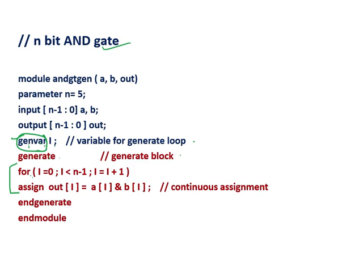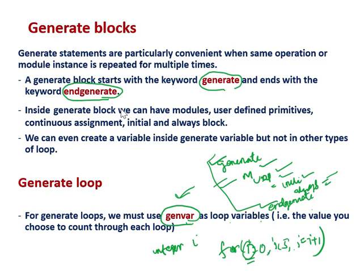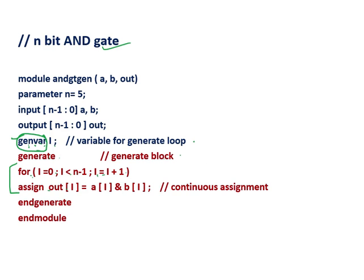Inside the generate block we have: for i = 0; i < N-1; i = i + 1. The variable 'i' is of genvar type. Then we have a continuous assignment: assign out[i] = a[i] & b[i]. This is the continuous assignment inside the generate block. So it will generate out[i] = a[i] AND b[i] for each iteration — with N-1 equal to 4, that gives iterations 0,1,2,3 — making this a 4-bit AND gate using a generate loop and genvar variable.